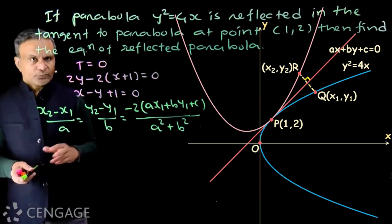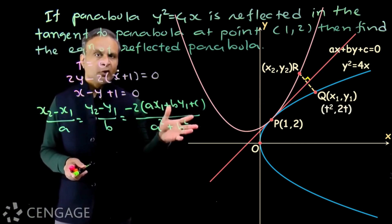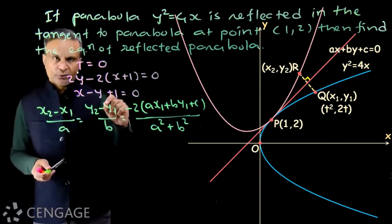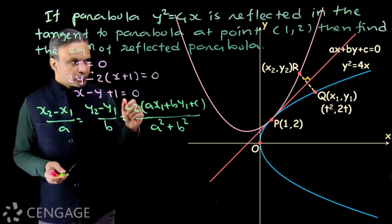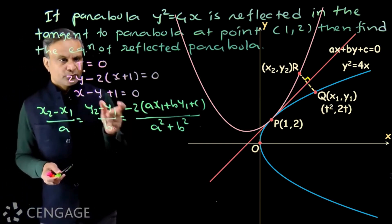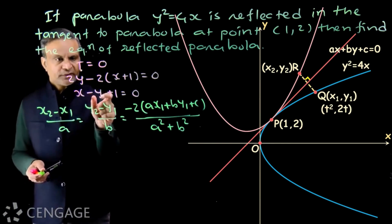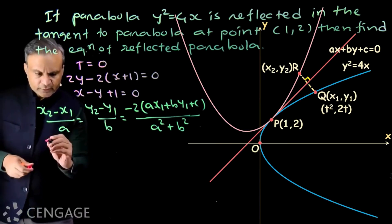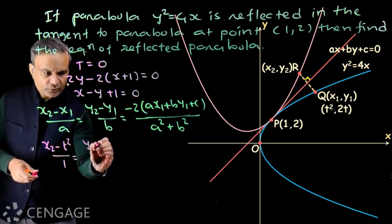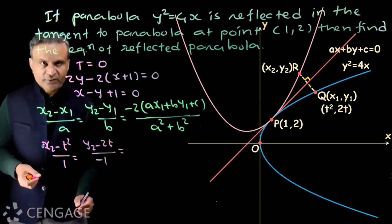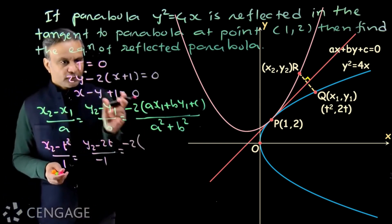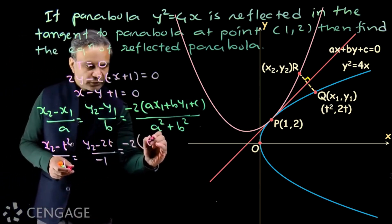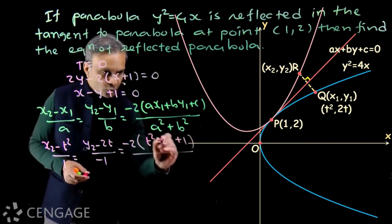Let the parameter of point Q be t, so its coordinates are (t², 2t). In the reflection formula, we put x₁ = t², y₁ = 2t, and comparing with x - y + 1 = 0, we get a = 1, b = -1, c = 1. Substituting, we get: (x₂ - t²)/1 = (y₂ - 2t)/(-1) = -2(t² - 2t + 1)/(1 + 1). The twos cancel, giving -(t² - 2t + 1) = -(t - 1)².